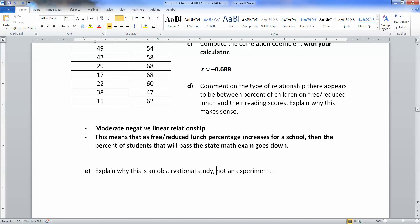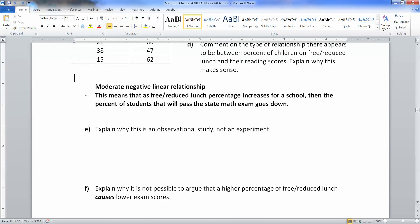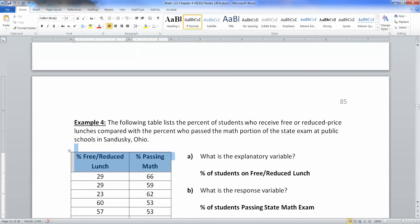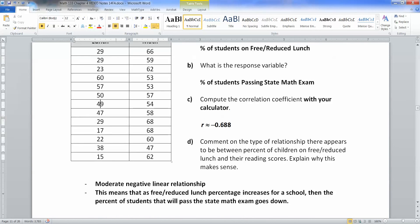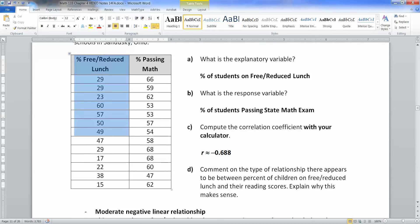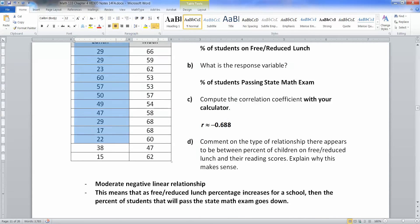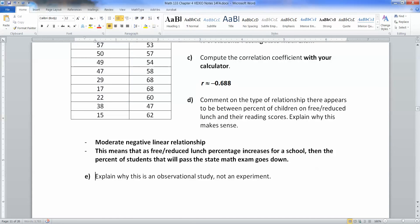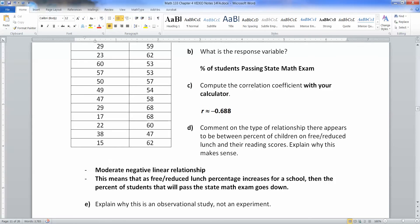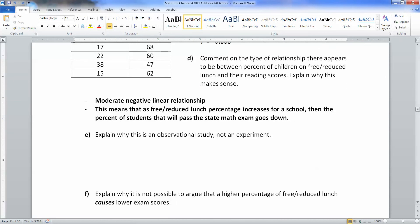This is a moderate negative linear relationship. That means that as free reduced lunch goes up, your percent that passed math goes down. That's what a negative relationship means: as your X increases, your Y decreases. So as free reduced lunch goes up, passing math goes down, which is what we were just saying. If you have increased poverty, hypothetically speaking, you have lower math scores. Now it does not have to be that way, that is just one relationship.